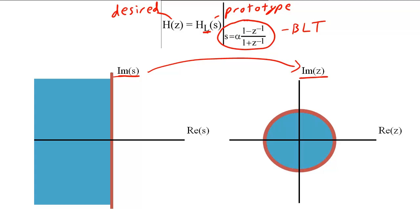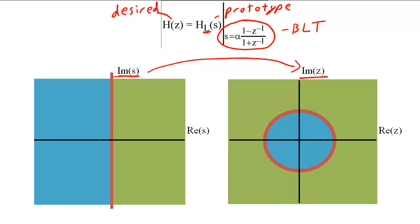We also see that points to the left of the imaginary axis on the S-plane map to points inside the unit circle on the Z-plane. The mapping also shows that points to the right of the imaginary axis on the S-plane map to points outside the unit circle on the Z-plane.